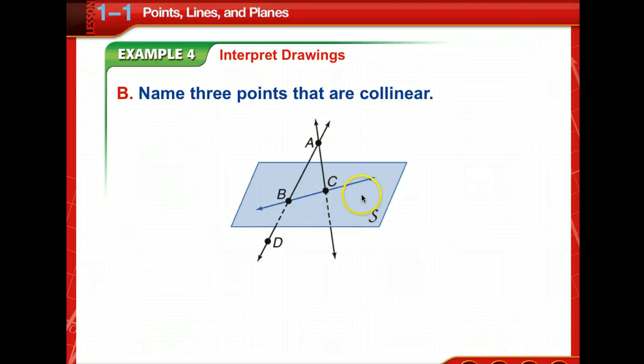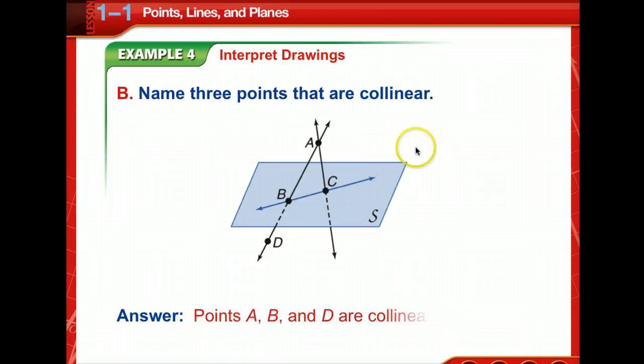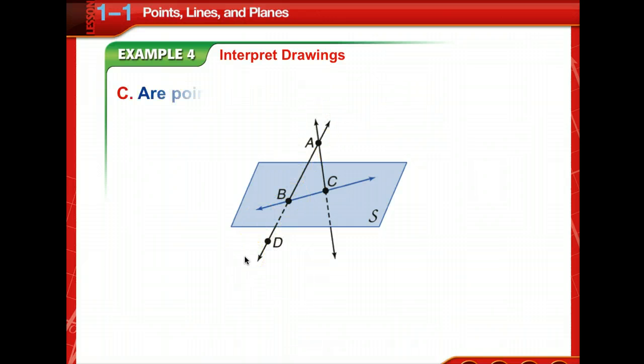Name three points that are collinear. Well, notice this. A, B, and C aren't collinear, but A, B, D are collinear. They lie on the same line. Good job, those of you that got that one. Let's try another one.